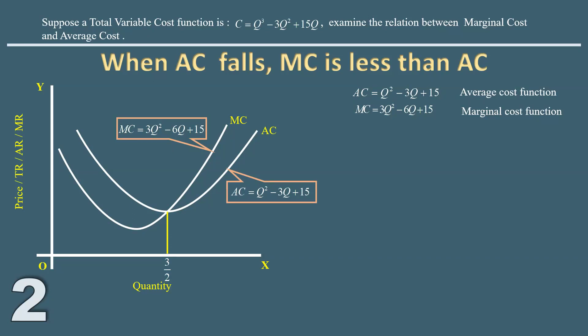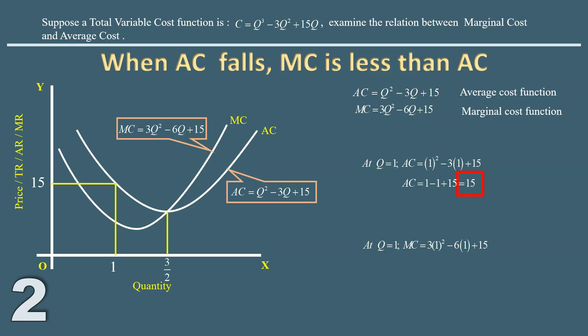To examine the second relation — when average cost falls, marginal cost is less than average cost — we choose an output less than 3/2, say one unit. At q = 1, average cost falls and marginal cost is less than average cost according to the graph. Plugging q = 1 into the average cost function gives 15, and into the marginal cost function gives 12. Marginal cost of 12 is less than average cost of 15.